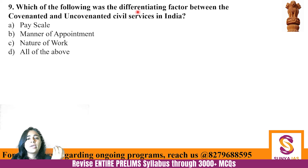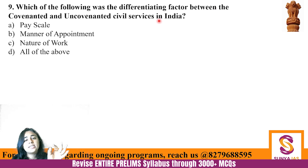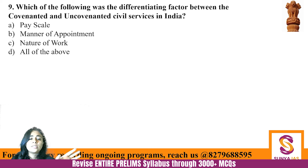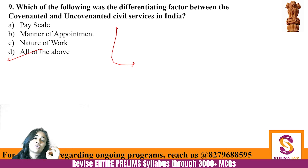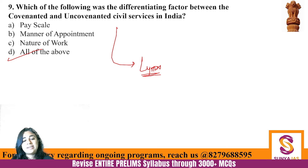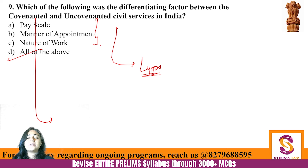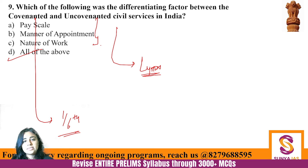Question 9: What was the differentiating factor between the covenanted and non-covenanted civil services in India - pay scale, manner of appointment, nature of work, or all of the above? The answer is all of the above. Lytton created the covenanted and non-covenanted services in 1878-79. In all three aspects, the covenanted service was better, and only one-sixth of the covenanted posts could be filled by Indians.